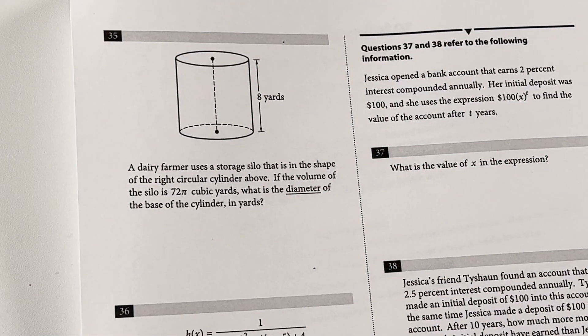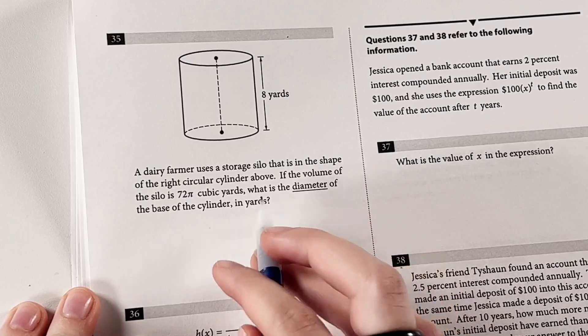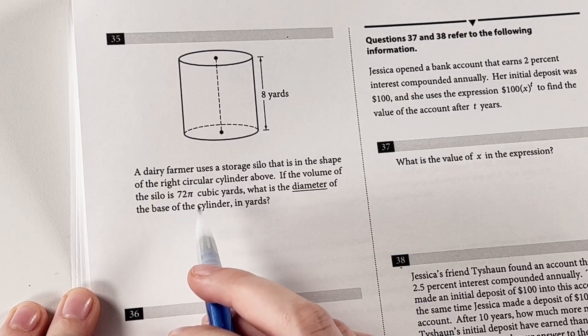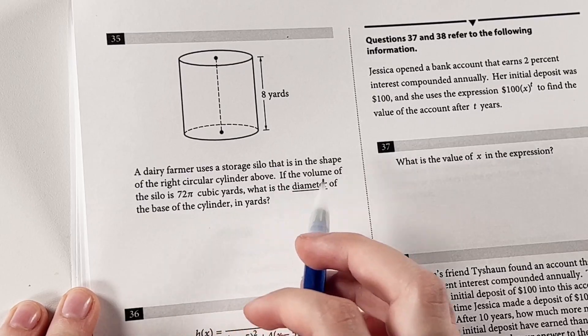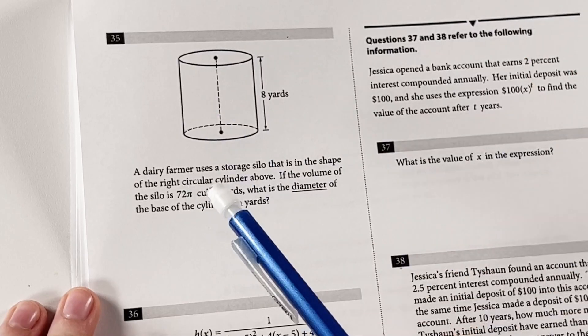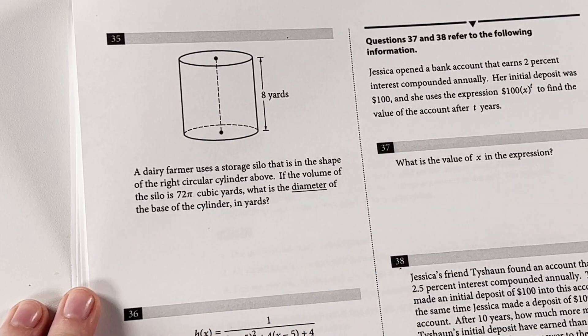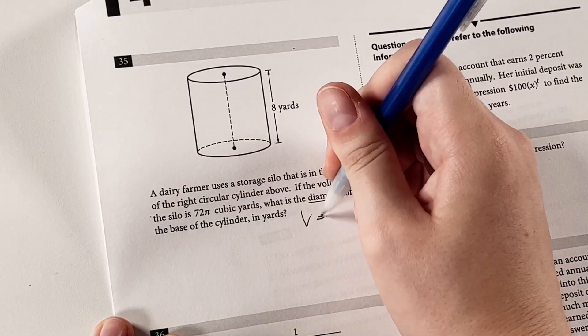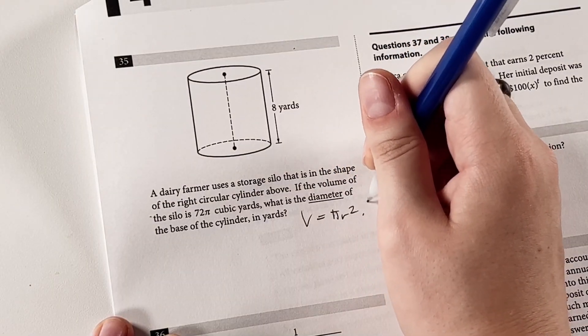Okay, last page. A dairy farmer uses a storage silo that is in the shape of the right circular cylinder above. If the volume of the silo is 72 pi cubic yards, what is the diameter of the base of the cylinder in yards? So we're going to use the volume of a cylinder equation for this. If you don't remember, it is actually on the front of the test, which is pretty handy. V equals pi r squared times the height of our cylinder.